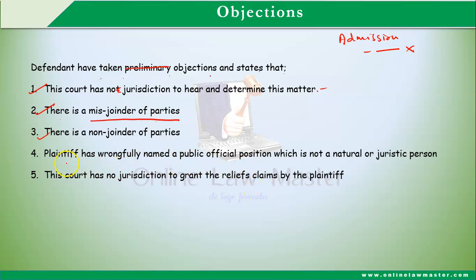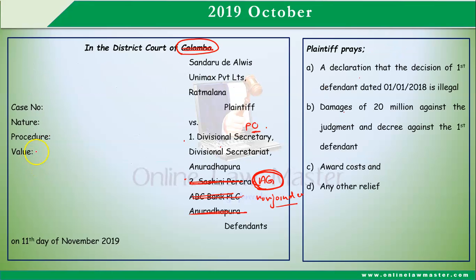Another important objection is that the plaintiff has wrongfully named a public official position, which is not a natural or juristic person. The position of 'Divisional Secretary' is not a legal entity with separate legal personality. This is a very important objection that you should write in your answer.